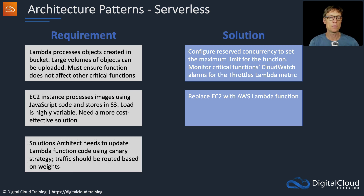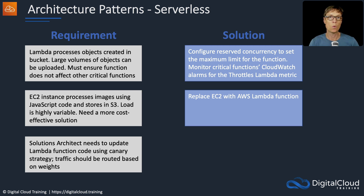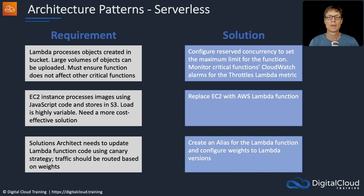A solutions architect needs to update Lambda function code using a canary strategy, and traffic should be routed based on weights. When we get to the section on CodeDeploy, you'll learn more about canary deployments — but for now focus on weights. Remember, you can use weightings to send certain amounts of traffic to different versions by creating an alias and configuring the weights to the Lambda versions.